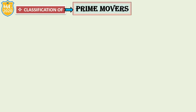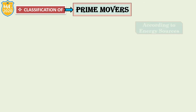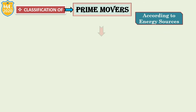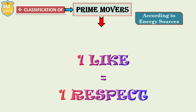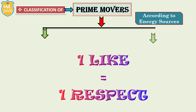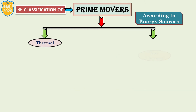Now we will go to the second part: the classification of prime movers. Generally, prime movers are classified according to their energy sources, which are divided into two categories: the first is thermal energy, and the second is non-thermal energy.